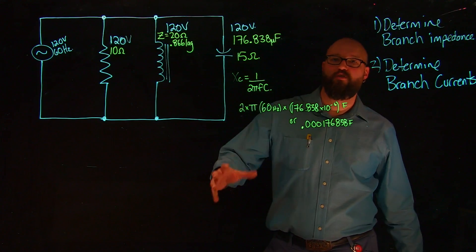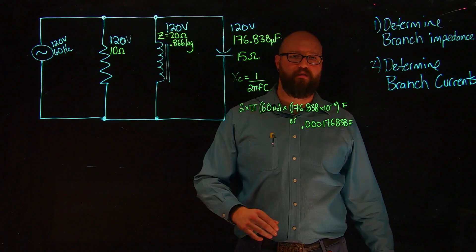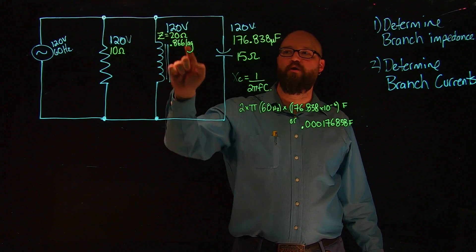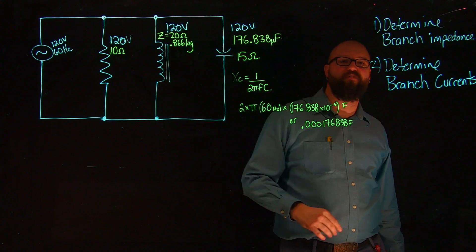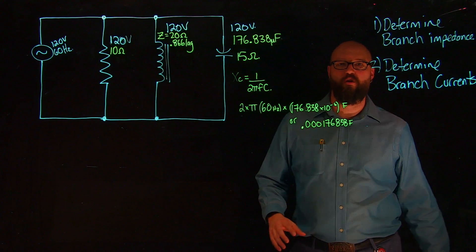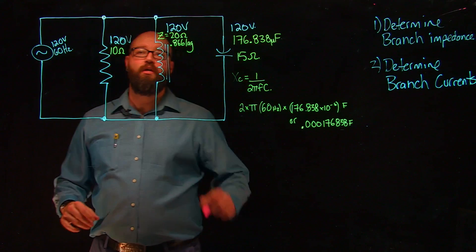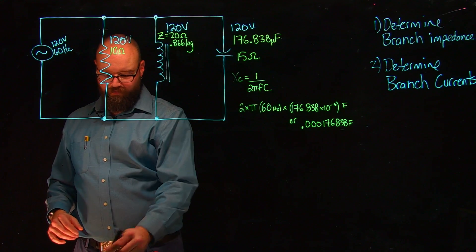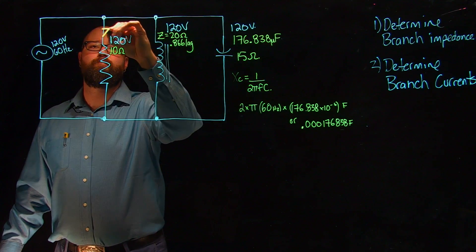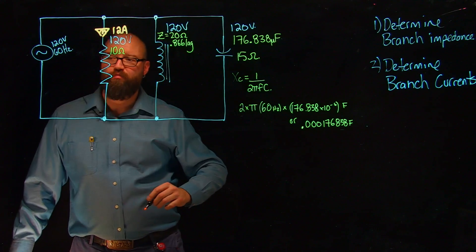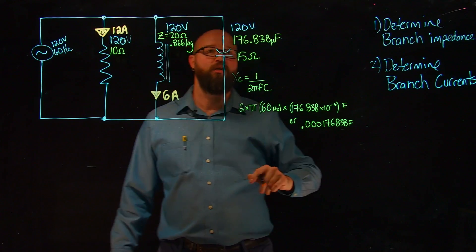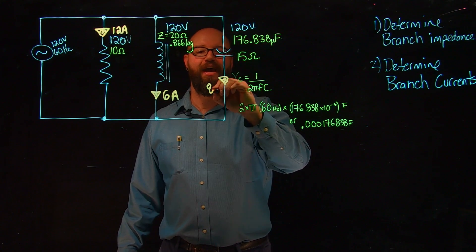Since this is a capacitor, the impedance of this branch equals the capacitive reactance. So we have: impedance of the resistive load equal to resistance (10Ω); impedance of the coil is 20 ohms at a 0.866 lag; and 15 ohms for our capacitor. Now that we have impedance values for each branch, we can use Ohm's law to determine the branch currents. 120V ÷ 10Ω gives 12 amps; 120V ÷ 20Ω gives 6 amps; and 120V ÷ 15Ω gives 8 amps through the capacitive branch.